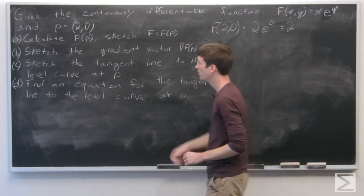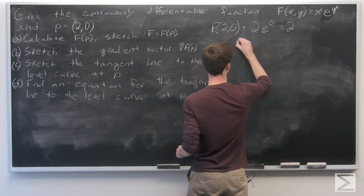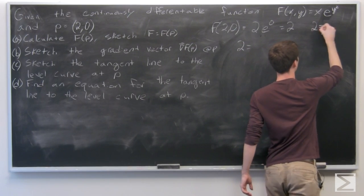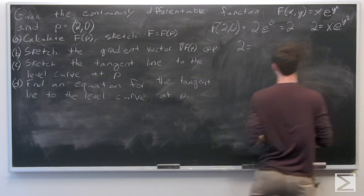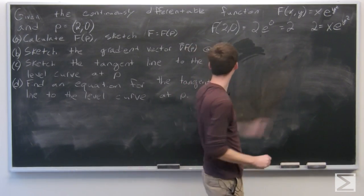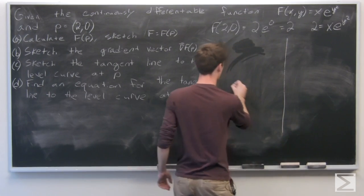So our level curve is going to be 2, or I'll write it up here: 2 = xe^(y²). So now let's sketch this level set.